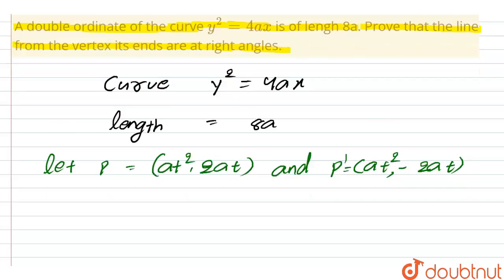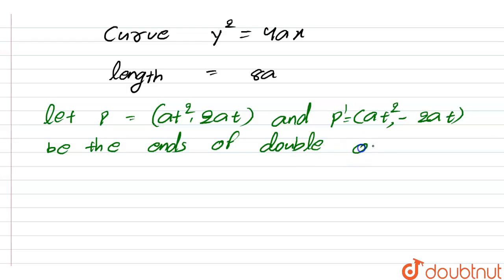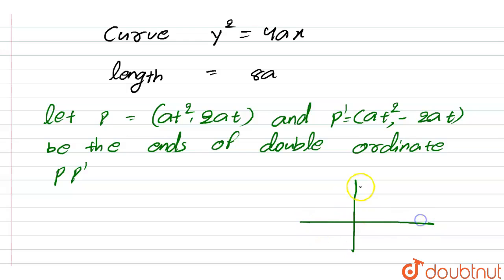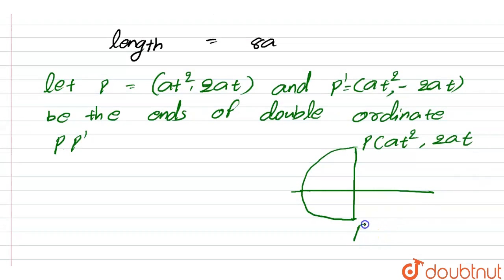P and P' are the ends of the double ordinate PP'. Let P = (at², 2at) and P' = (at², −2at). Let's draw the diagram. It is a double ordinate, where P = (at², 2at) and P' = (at², −2at).